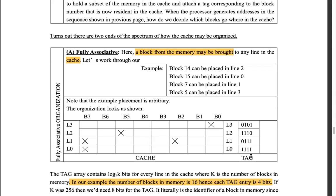What is the problem with a fully associative design? It has to check every record in the tag. There is actual hardware — a comparator — that compares if the two values match. If you have a fully associative design, you need a comparator for each entry, and your destination needs to be compared to each entry in the tag, which is time consuming.